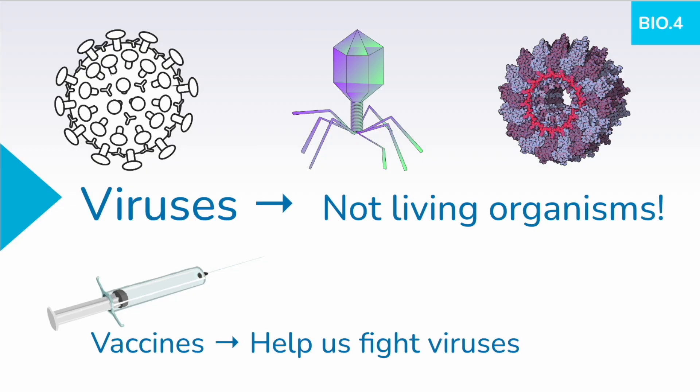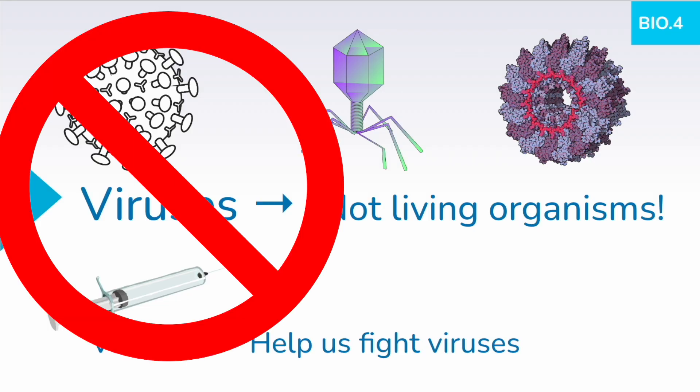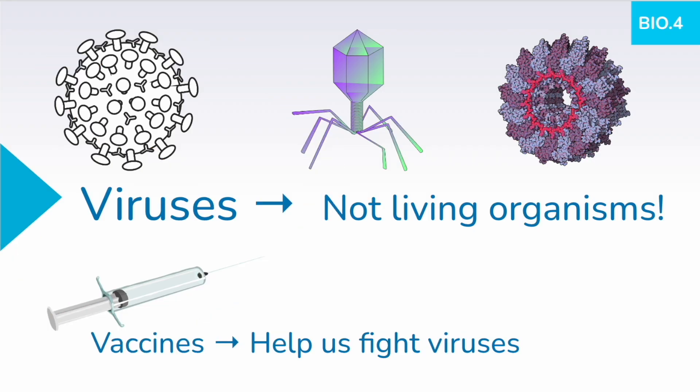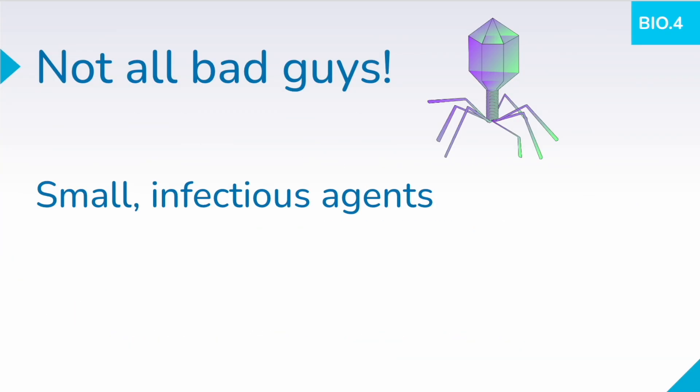Through studying viruses, scientists have developed vaccines and antiviral medication that helps us fight viruses. Remember, vaccines are dead or weakened forms of a virus that are injected into a person so that the body is able to produce antibodies and have a stronger response when they are actually infected by the real virus. Remember, they're not cells — they're extremely tiny and we have to use a special type of microscope to see them.